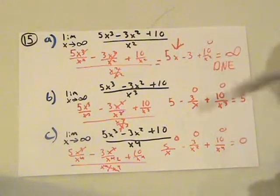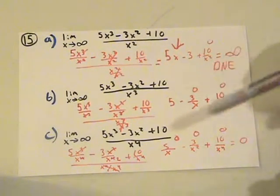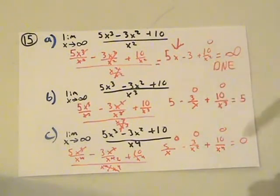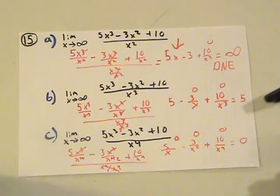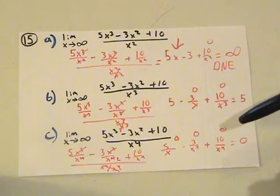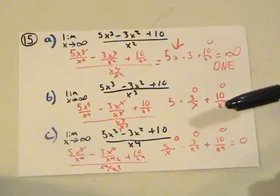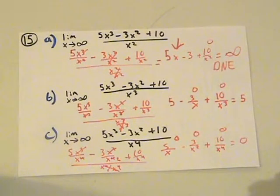For part C, I got 5 over x minus 3 over x squared plus 10 over x to the fourth. When you set the limit, everything in this function ends up being zero. So the limit is simply zero. That's number 15.